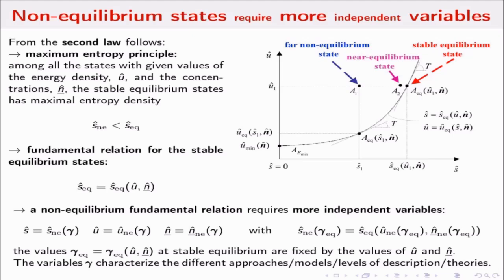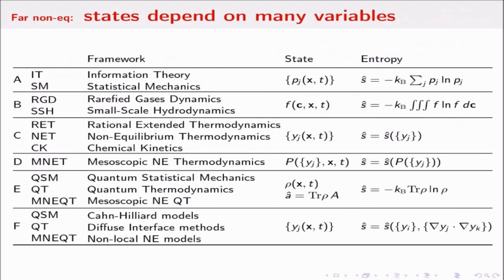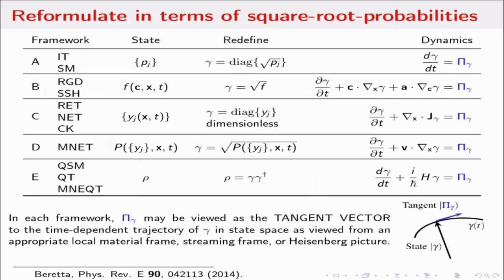What characterizes different theories of nature is what we choose for gamma. Here is the list of state variables of different theories that we adopt. Each one has a formula for entropy. You probably recognize your own favorite theory here. Whenever there is a probability, I prefer that we think of the square root of the probability, so it's easier to keep the non-negativity of probabilities.